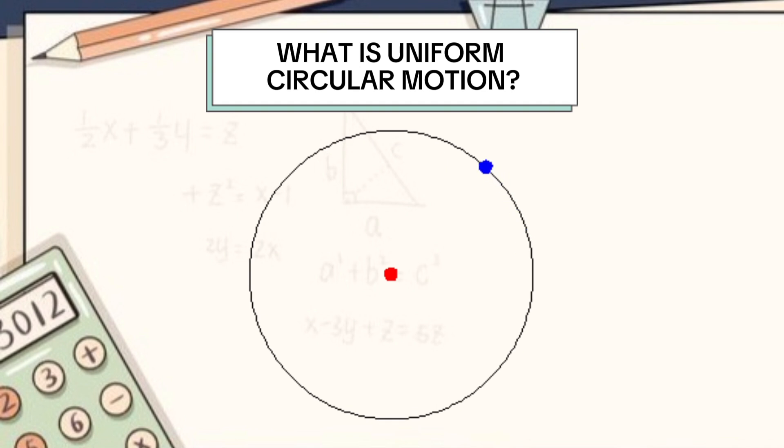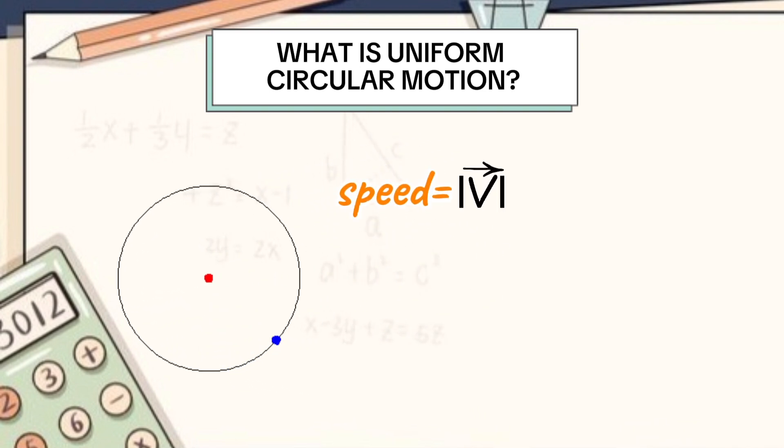When an object moves around a circle with constant speed, it is called Uniform Circular Motion. So, basically speed, that is the magnitude of velocity, remains constant, but direction of velocity keeps changing.